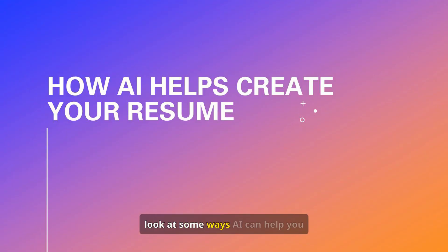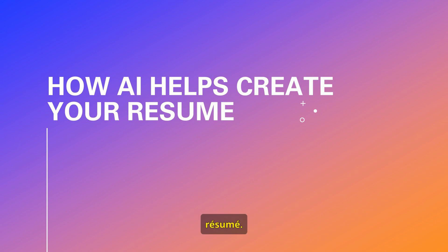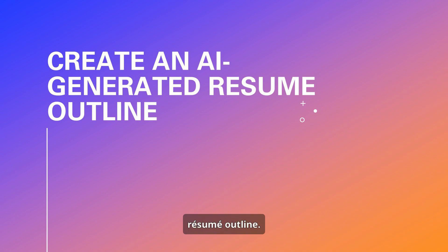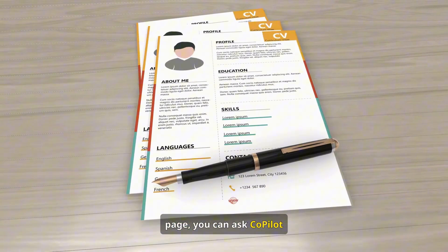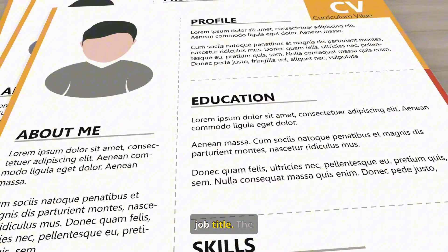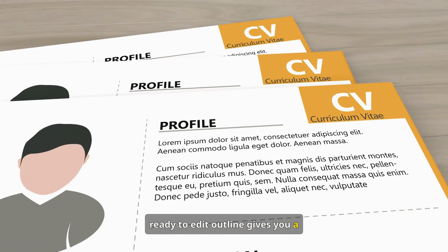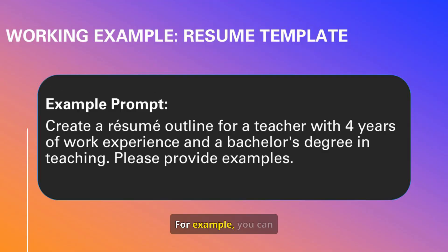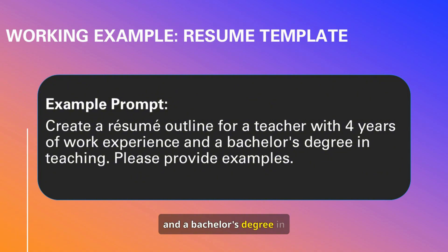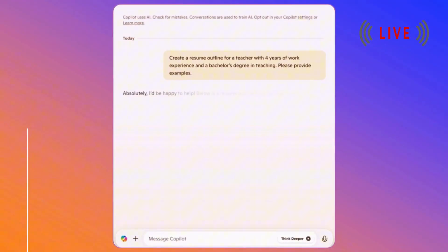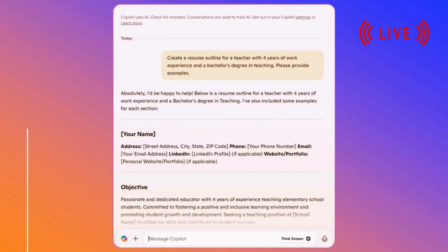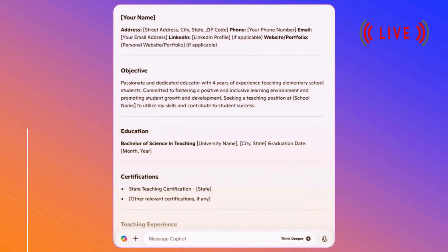Now for the main event, let's look at some ways AI can help you create and refine your resume. First up: generating a resume outline. Instead of facing a blank page, you can ask CoPilot to generate a resume draft tailored to an industry or job title. For example, you can use this prompt: 'Create a resume outline for a teacher with four years of work experience and a bachelor's degree in teaching. Please provide examples.' We'll review the results for each section including titles and content, paying close attention to any missing sections or details.